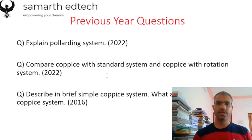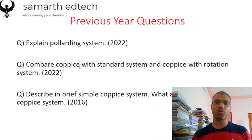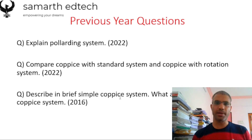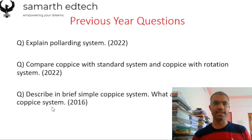Some previous year questions: 'Explain the Pollarding system' was asked in 2022. 'Compare Coppice with Standards System and Coppice of Two Rotation System' was asked in 2022 and 2016. 'Describe in brief the Simple Coppice System and what are the types of coppice system' — you need to explain the simple coppice system with a diagram and mention the names of the types. This is all about your silvicultural systems. In the next lecture we will see certain other topics of Indian Forestry. Thank you.